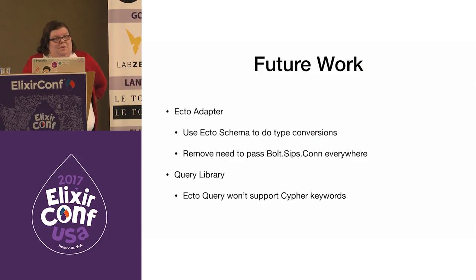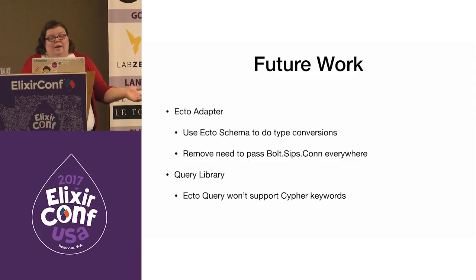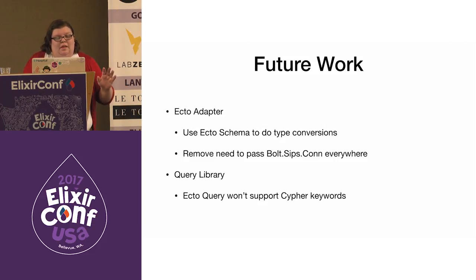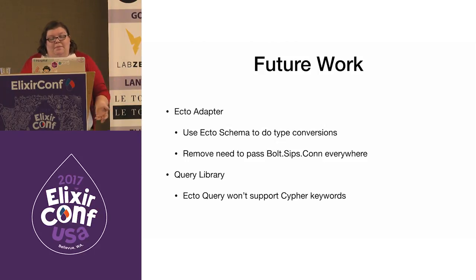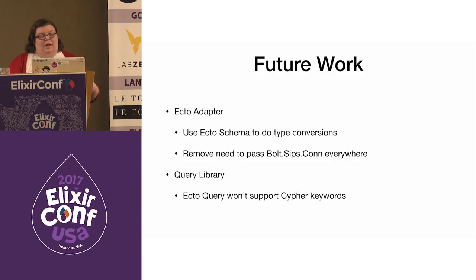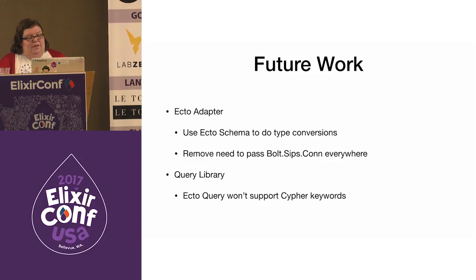There's some future work to be done on this. I'd like to turn the basics of what I have here into some sort of Ecto adapter for Neo4j — it's really close, and I think it would make using Neo4j in an Elixir project a lot easier. For the adapter, I'd like Ecto Schema to handle the type conversions and figure out a way to not need to pass Bolt Sips connection everywhere. I'd also like to make some sort of query library for this, as Ecto isn't going to start supporting Cypher keyword terms anytime soon — and that came from Jose.